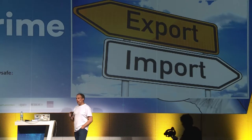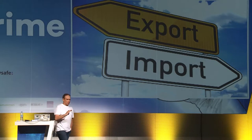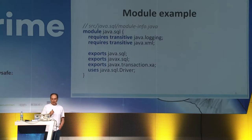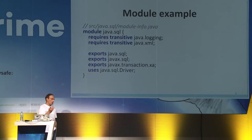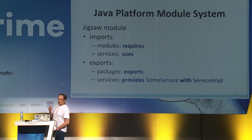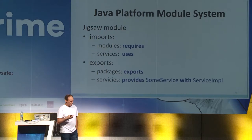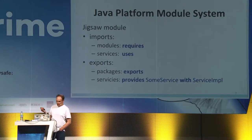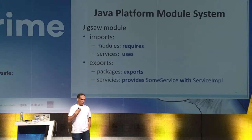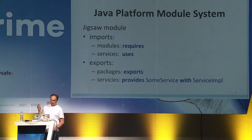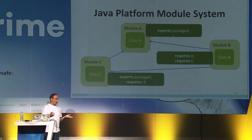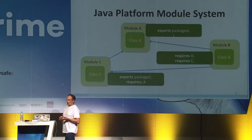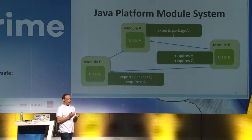Any module system is all about import and export — modules import something and export something. It's an extremely easy concept. Modules in JPMS are described in source files called module-info.java in the source root of your module. So modules become part of your source code and not external metadata. A module imports modules with the 'requires' keyword and exports packages with the 'exports' keyword. Modules can also use and provide services with 'uses' and 'provides' keywords. Once import and export is resolved, modules form a modular dependency graph.